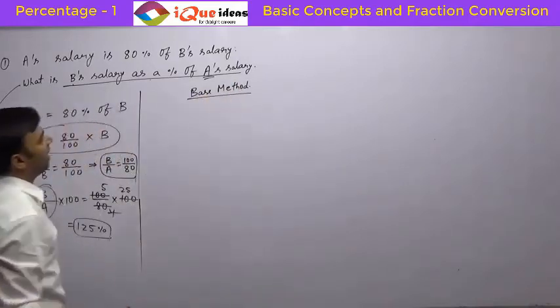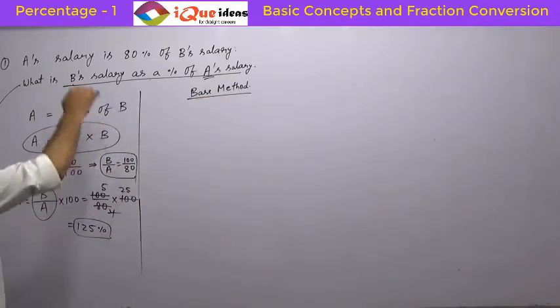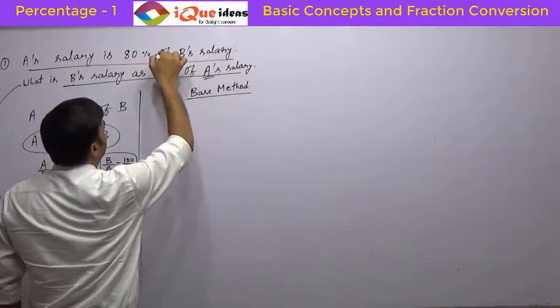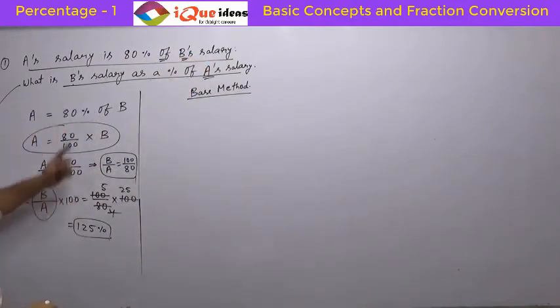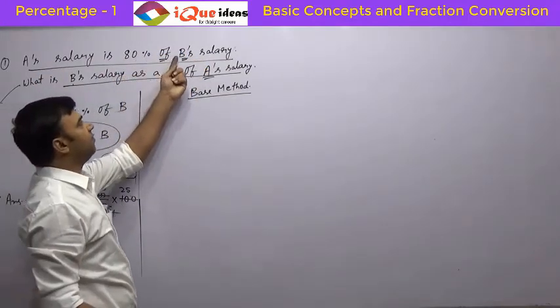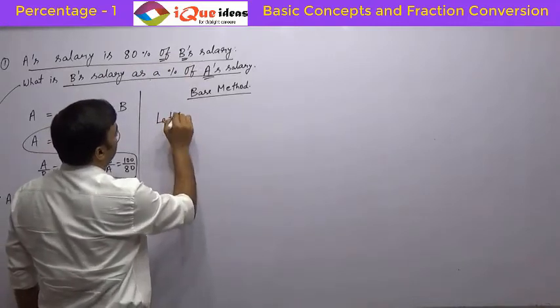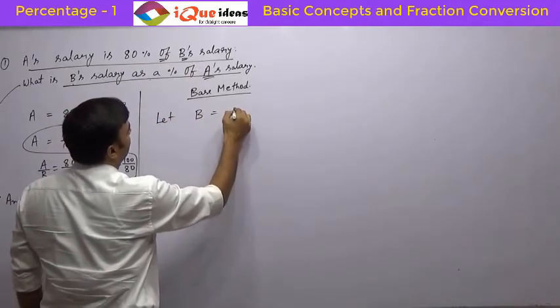What we need to do? We need to take one value as the base. How do we decide? In the first statement, whatever comes after 'of' will become the base. So A's salary is 80% of B's salary. So let us assume that B's salary is 100 rupees.